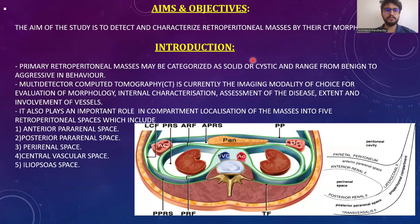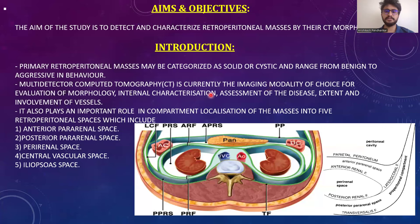The aim of the study is to detect and characterize retroperitoneal masses by CT morphology. Primary retroperitoneal masses may be categorized as solid or cystic and range from benign to aggressive in behavior. MDCT is currently the imaging modality of choice for evaluation of morphology, internal characterization, assessment of disease extent and involvement of vessels.